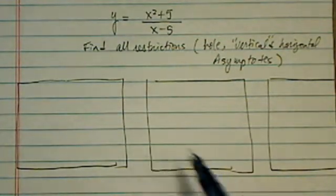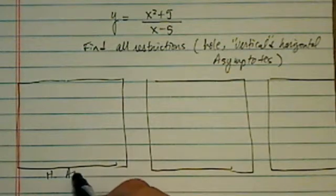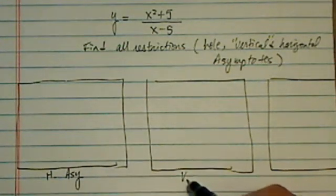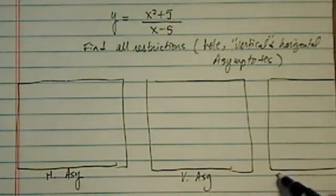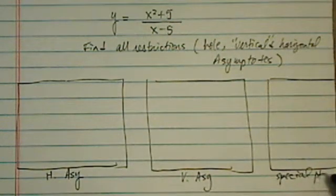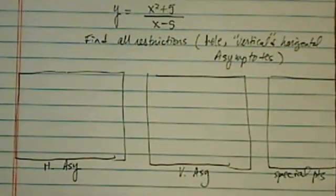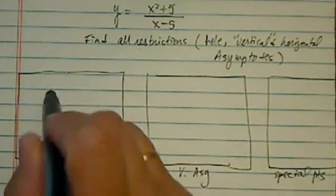The first thing we're going to do is check this thing called the horizontal asymptote. We need a vertical asymptote, and we have special interest points. Okay, so those are the three parts you need to find out in order to graph a rational equation.